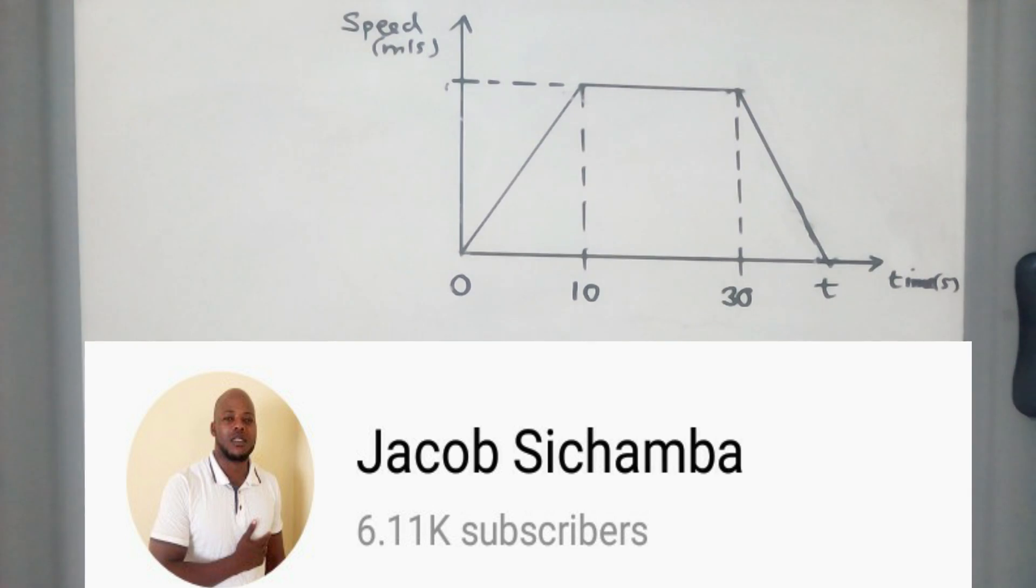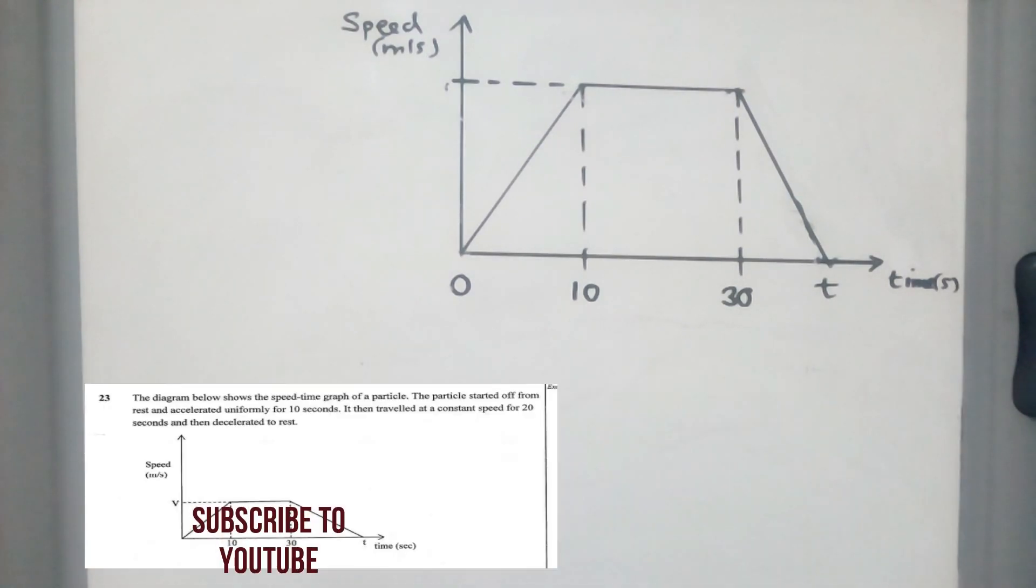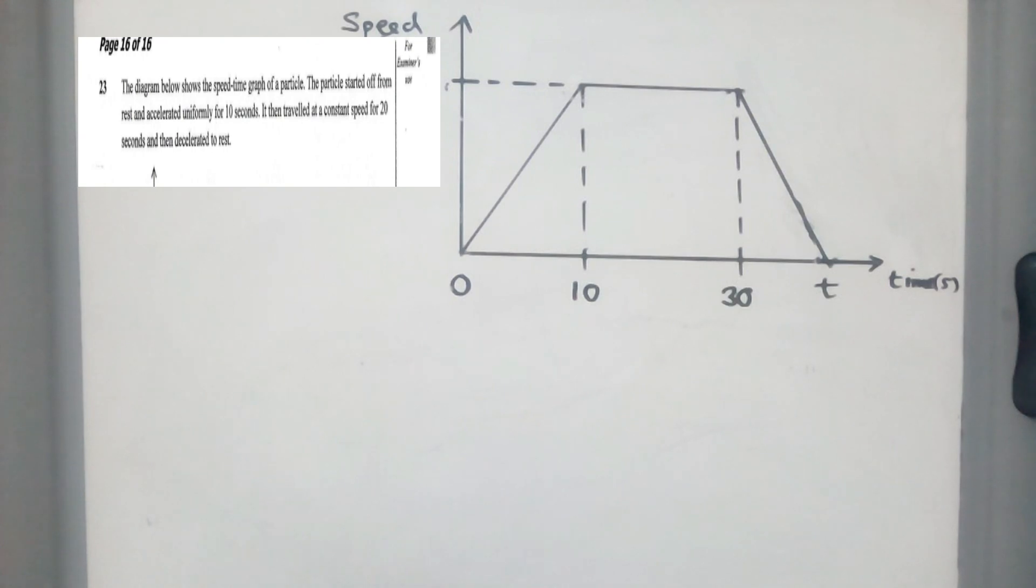So the question I'm about to discuss with you now, what do you miss in paper 1? So this question came in 2018. It's 23. We know this is a speed time graph. So the question reads, the diagram below shows the speed time graph of a particle. The particle started off from rest and accelerated uniformly for 10 seconds. It then traveled at a constant speed for 20 seconds and then decelerated to rest.